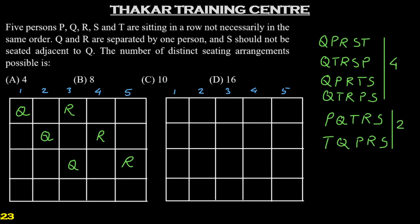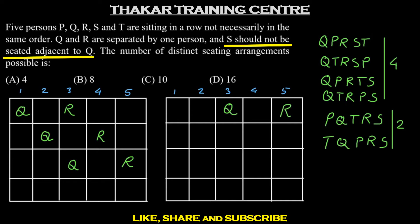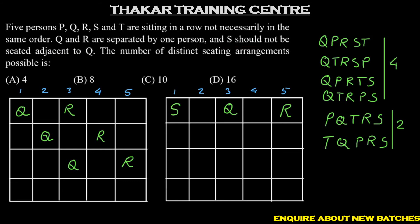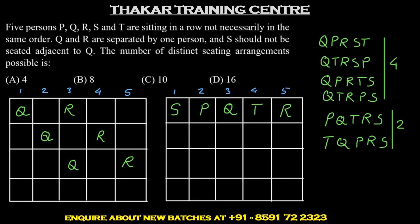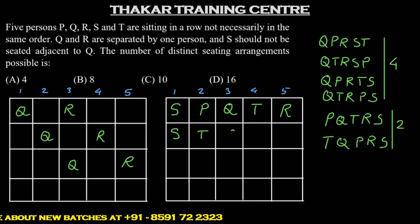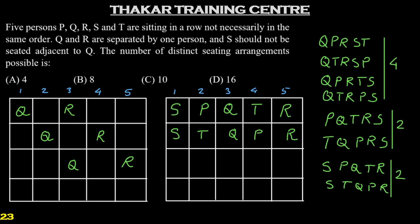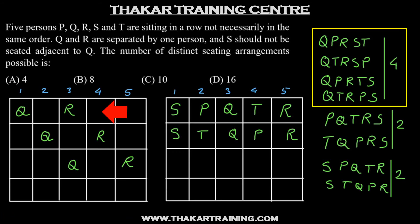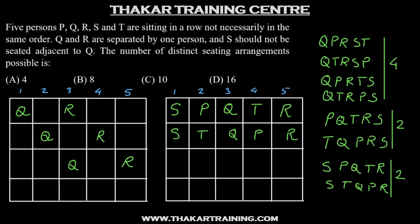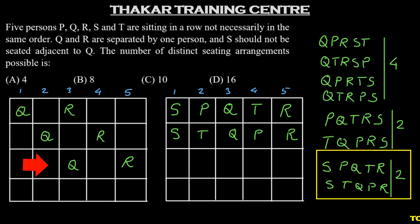Then coming to Q and R occupying positions 3 and 5. S cannot occupy positions 2 or 4, since S cannot be seated adjacent to Q. So S occupies position 1, and P and T can occupy positions 2 and 4, giving two possible arrangements. So we have 8 arrangements in total: 4 with Q and R at positions 1 and 3, 2 with Q and R at positions 2 and 4, and 2 with Q and R at positions 3 and 5.